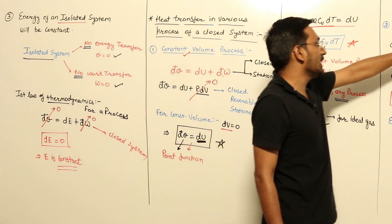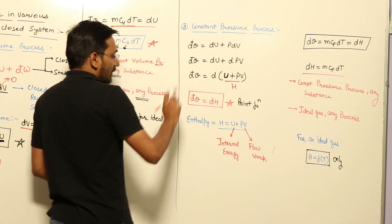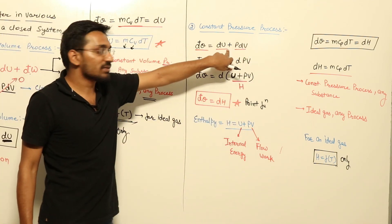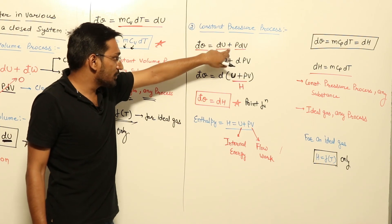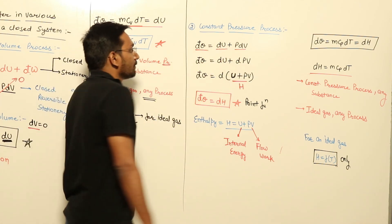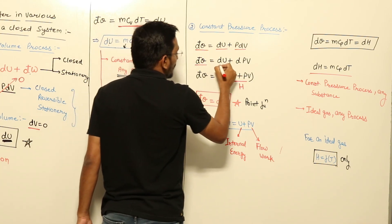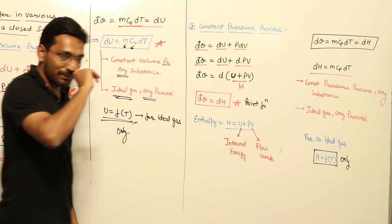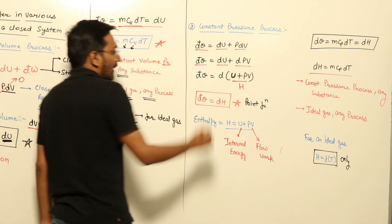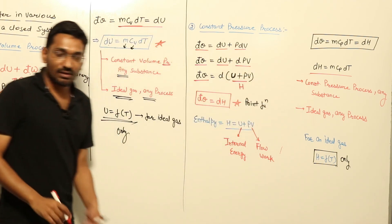The next process we are taking is your constant pressure process, where pressure is constant. The first law of thermodynamics will be DQ equal to DU plus PDV. The assumptions are again: closed system, PDV present so reversible, DU present so system must be stationary. Since P is constant, I am taking P inside the differentiation, giving DQ equal to DU plus D(PV) — change of PV.